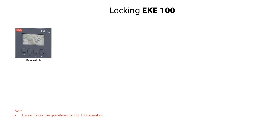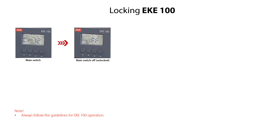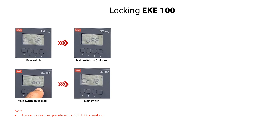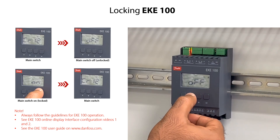After completing the configuration of the EKE100, you need to lock it again. From the CR12 mode, press the enter key to change the OFF setting. Press the arrow up key to change the setting from OFF to ON. Press the enter key to confirm the ON setting and return to the CR12 mode. The EKE100 is now locked and ready for operation.